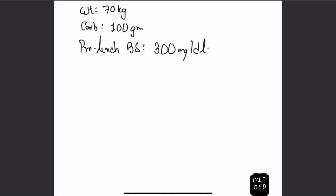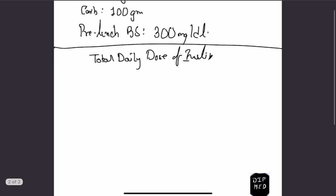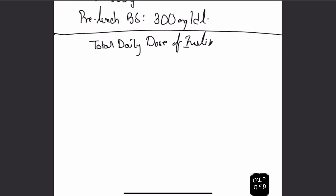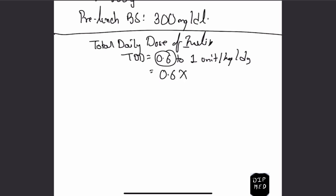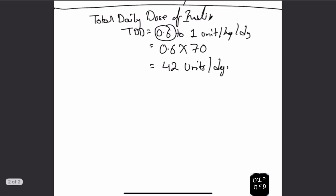The first step is to calculate the total daily dose of insulin for this patient. Since this patient is not under any insulin therapy, we will estimate his starting dose using a standard formula: 0.6 to 1 unit per kilogram per day. Taking 0.6, that gives us 0.6 × 70 = 42 units per day. So this patient requires a total daily dose of 42 units of insulin.